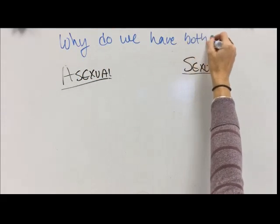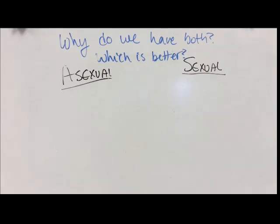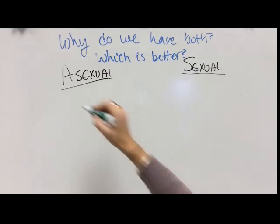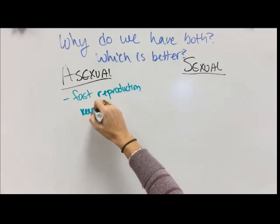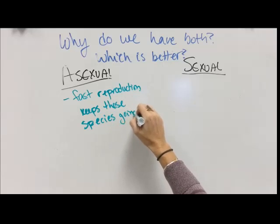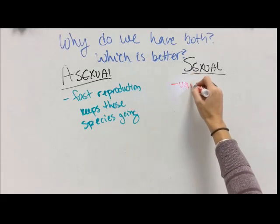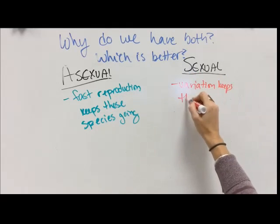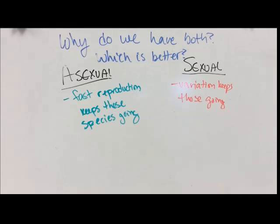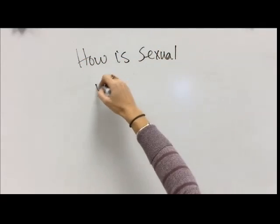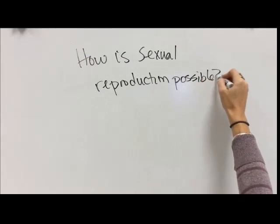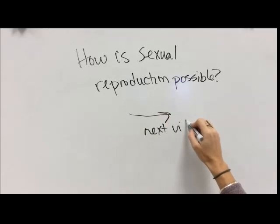So why do we still have both? Certainly one should have won out over the other after millions of years. The thing is, they're both good and both bad. Asexual reproduction is very fast, so organisms reproduce quickly despite lacking genetic diversity. Sexual reproduction takes so long we should arguably all be gone, but the variation is what keeps us around because there's always a difference that gets passed on. How is sexual reproduction even possible? That is our next video.